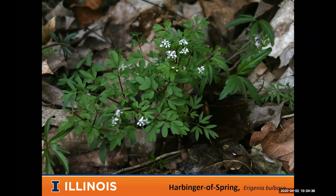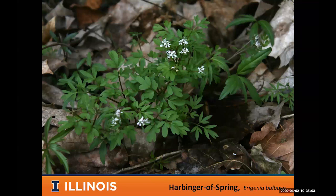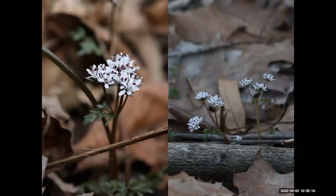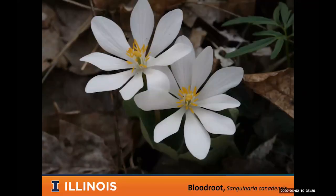First is harbinger of spring — for much of Illinois, this is our first spring wildflower. In far southern Illinois it sometimes blooms in late January. Northern Illinois has skunk cabbage and snow trillium filling early spring roles too. Harbinger of spring is a beautiful little plant with tiny flowers, only a couple inches high. Often the flowers come out even before the fern-like leaves appear.